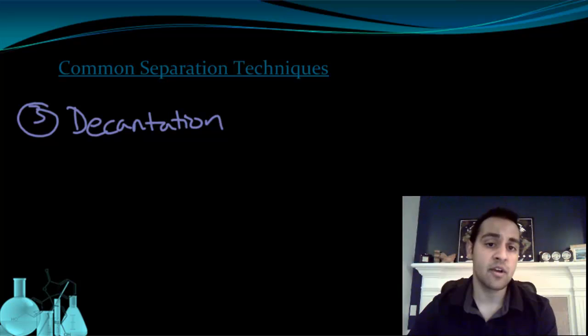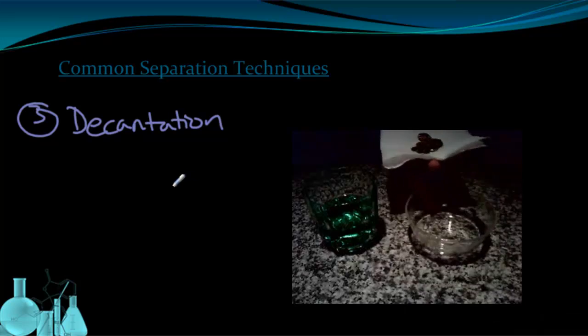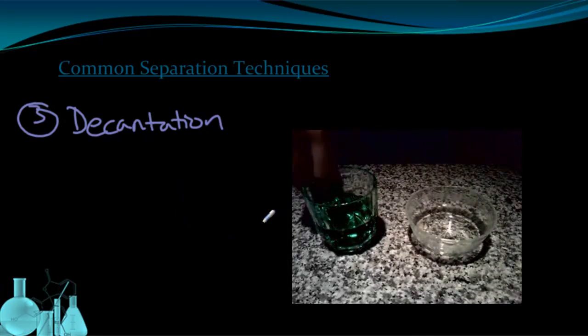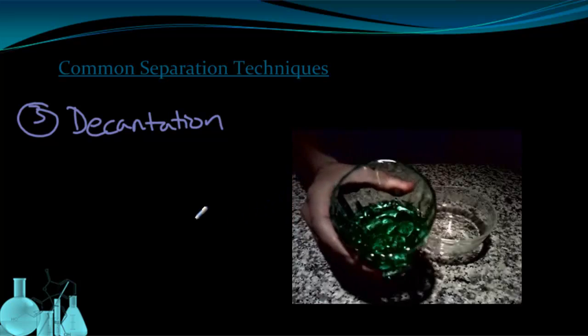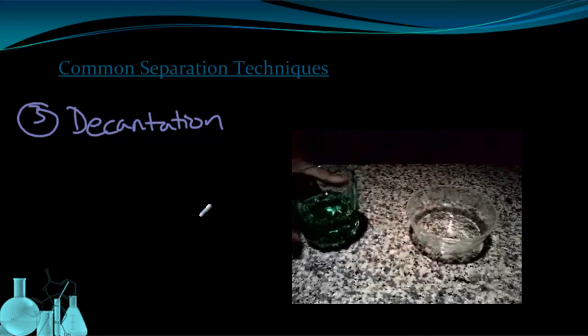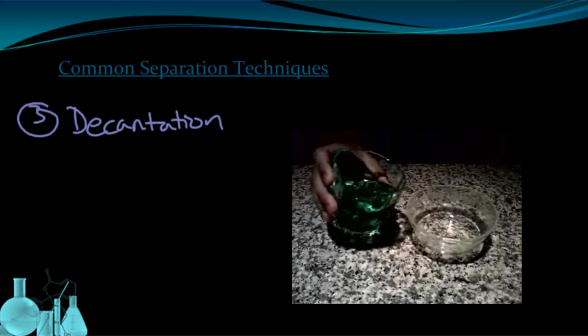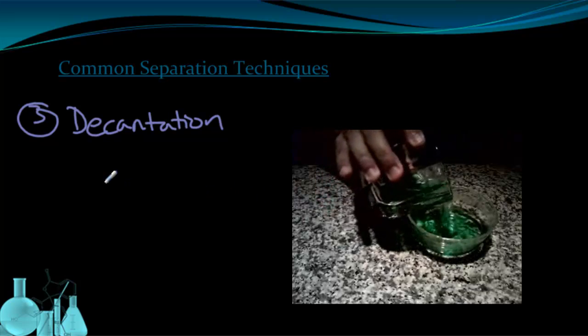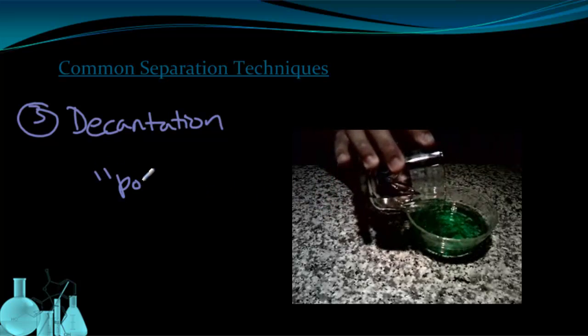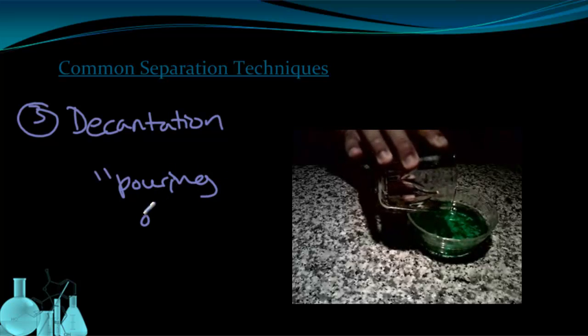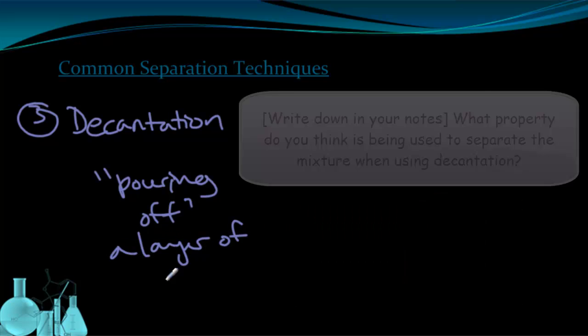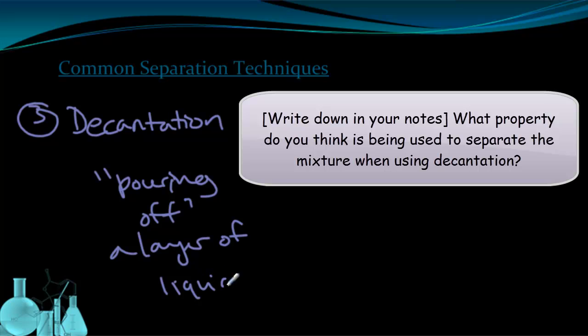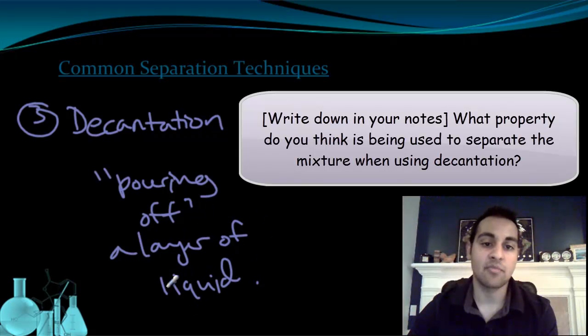The third separation technique we're going to talk about is decantation or decanting. This one is really simple. If you basically have a container, we have some water here, and let's say we throw some objects into it. You'll notice that they sink to the bottom. And we can very easily just pour off the water to separate the water from the stuff we just threw in. So that's decanting. It's basically pouring off a layer of liquid. Very simple but effective separation technique.